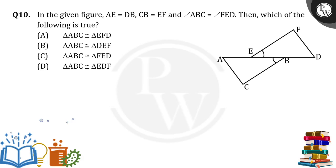Hello everyone, in the given figure AE is equal to DB, CB is equal to EF and angle ABC is equal to angle FED. Then which of the following is true?